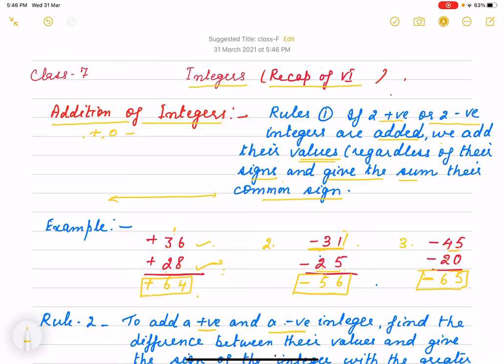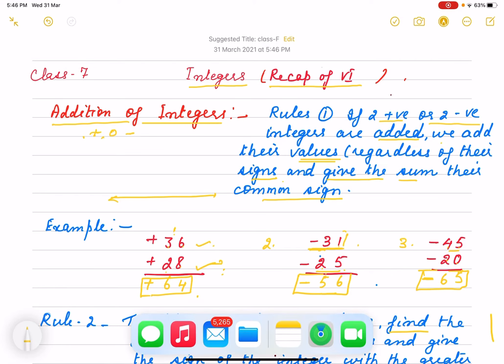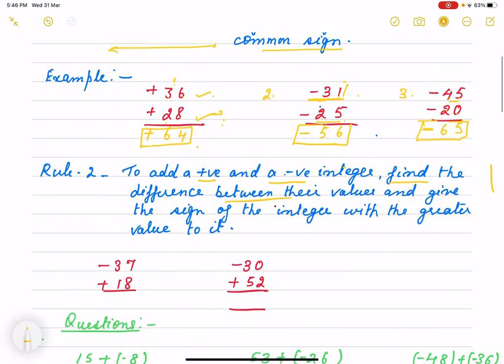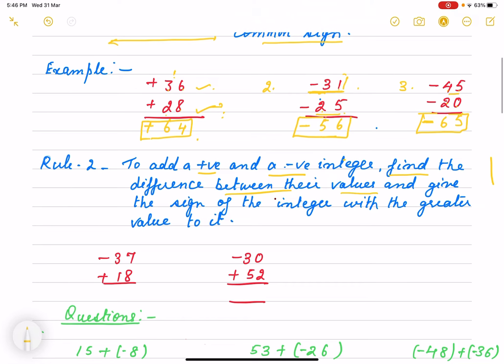What happens when their signs are different? Suppose there is one positive and one negative integer. We subtract. We take the difference between their values, and after that we give the sign of the integer with the greater value.